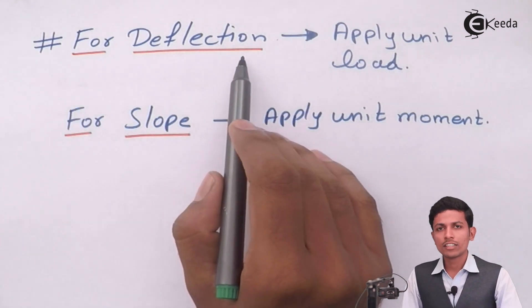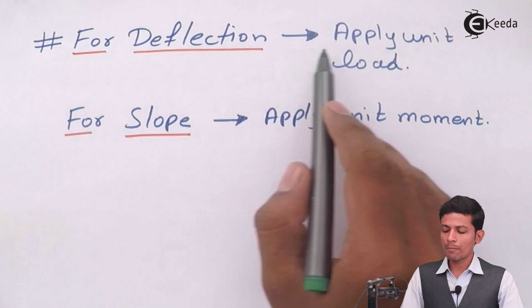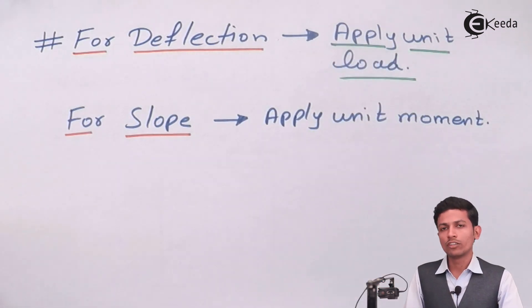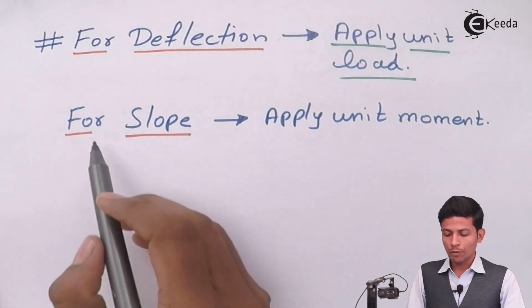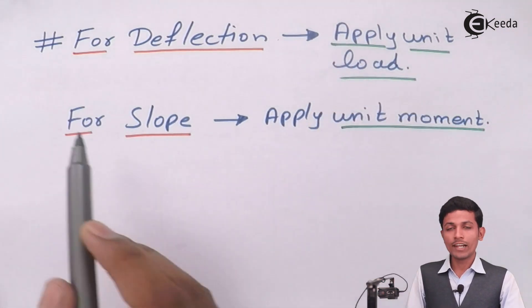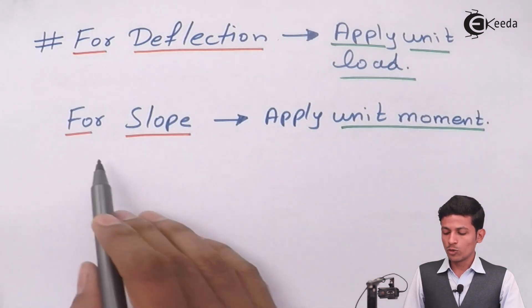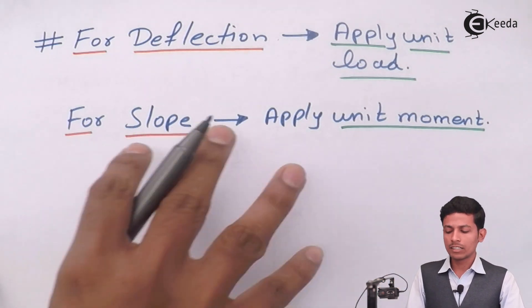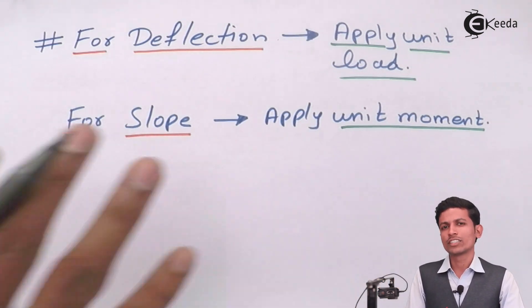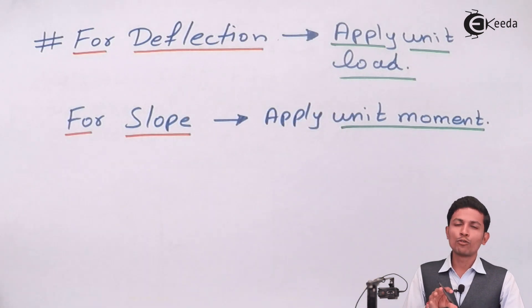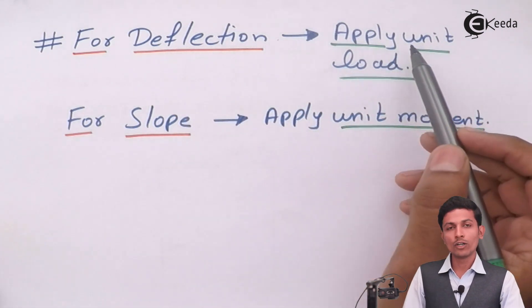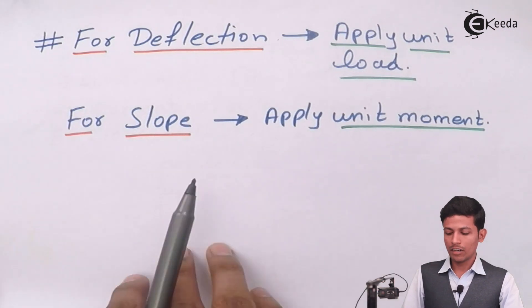For deflection, in any point you have to find the deflection, simply apply the unit load over there, vertical or horizontal which is given in the questions. For slope, apply unit moment. For deflection, apply unit load. For slope, apply unit moment. These two things are important in this chapter. If you have to find slope or deflection at a certain point, simply apply the unit load or unit moment.